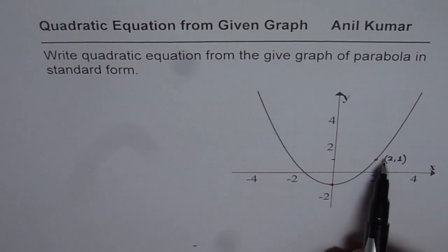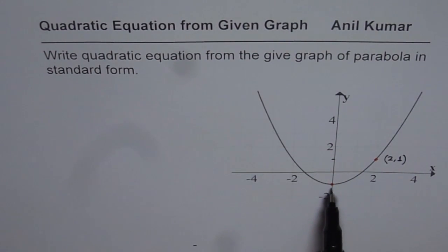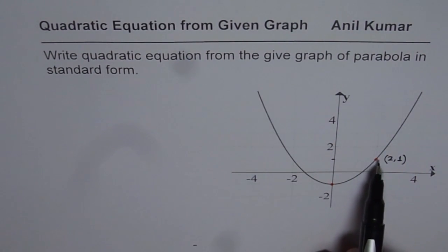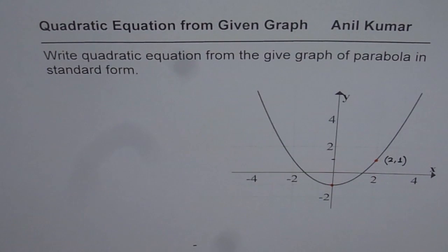Notice I've highlighted two points on this parabola: one is the vertex and another point on the graph. These points should help you write down the quadratic equation from the graph.